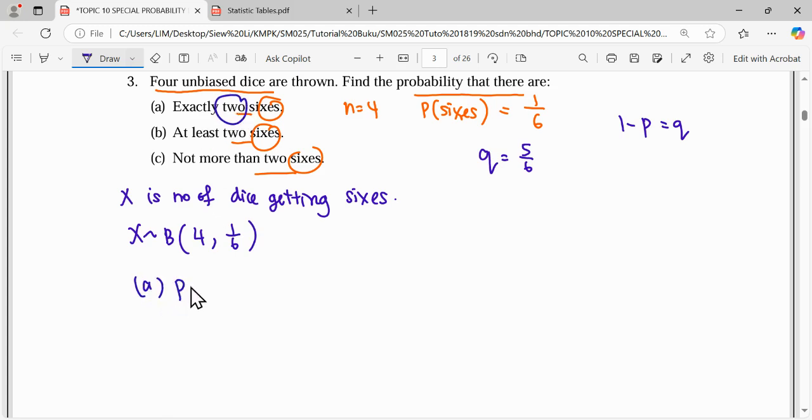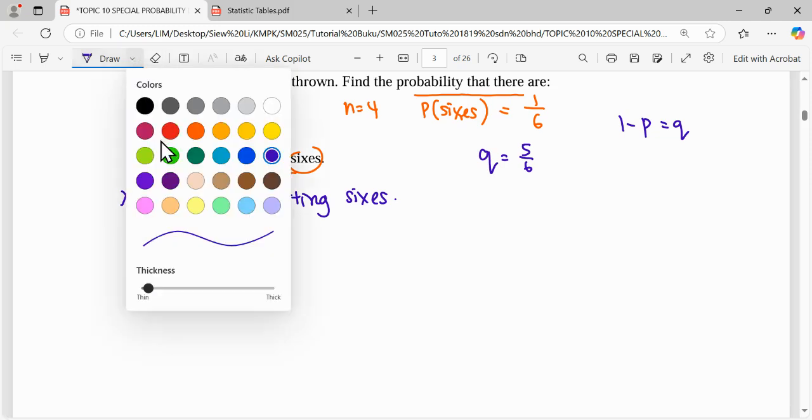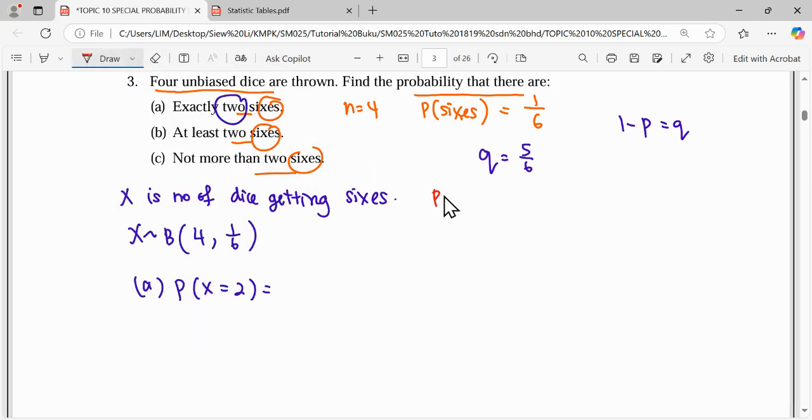Number of dice is exactly two. We can use the binomial formula: P of X equals r equals nCr times p to the power of r times q to the power of n minus r. From here, our n is four, r is two, p is one over six to the power of two, then five over six to the power of two. This gives our answer 0.1157.